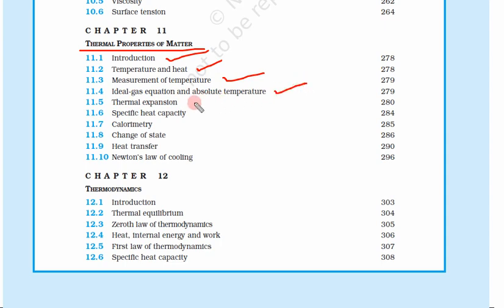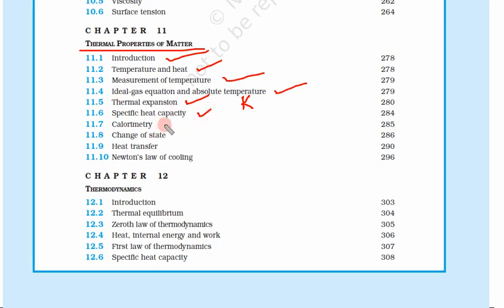We will learn measurement of temperature, how we measure temperature, the ideal gas equation and absolute temperature. Absolute temperature is temperature in Kelvin — but why do we use Kelvin? That we will learn here. Thermal expansion: if we heat something it will expand, but why? Also specific heat capacity — how much heat something can absorb — and calorimetry, which is measuring these things.